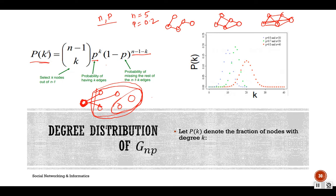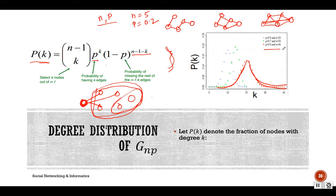This is the fraction of nodes with degree k, and from this formula we can see that it follows a binomial distribution. From the plot, we observe that with different values of p and n, each time we plot the degree distribution it will always follow a binomial distribution.